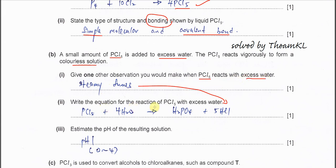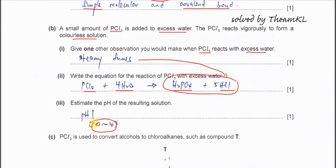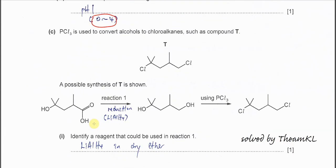Write the equation for the reaction of PCl5 with excess water. You have to remember this one. PCl5 with water forms two acids: H3PO4 and HCl. This is the white fume. Estimate the pH of the resulting solution. Because the solution has a strong acid now, it's better to put pH 1 to 2. Normally we put pH 1.